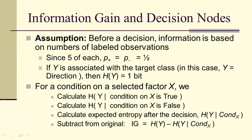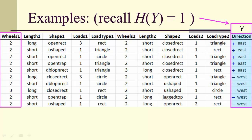So information gain — let's talk about how we actually do it in practice. There are five of each, so P plus and P minus are one half, five out of ten. If Y is associated with the target class — in this case direction, eastbound or westbound — then H of Y is one bit because both P plus and P minus are one half. Now if we have a condition on a selected factor, we're going to calculate the specific conditional entropy given that the condition X is true and then that X is false. Then we'll look at the expected entropy in Y given this condition, subtract that from the original, and that gives us our information gain. Keep in mind that H of Y is equal to one.